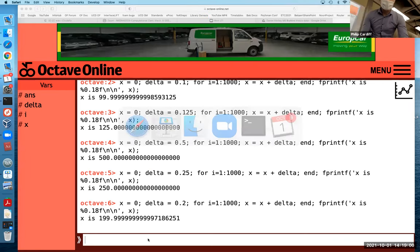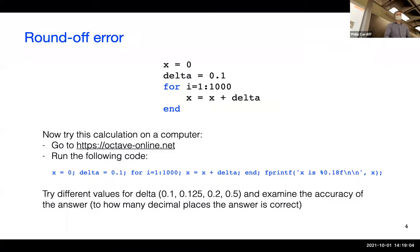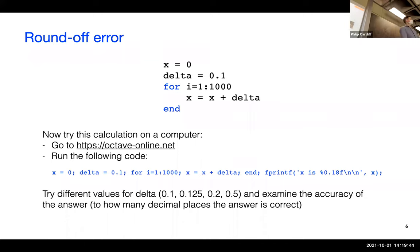Why do some numbers work and others don't? There's something special about 0.125 and 0.5 — there's a relationship you can think of. The reason has to do with how numbers are stored in a computer — in binary.